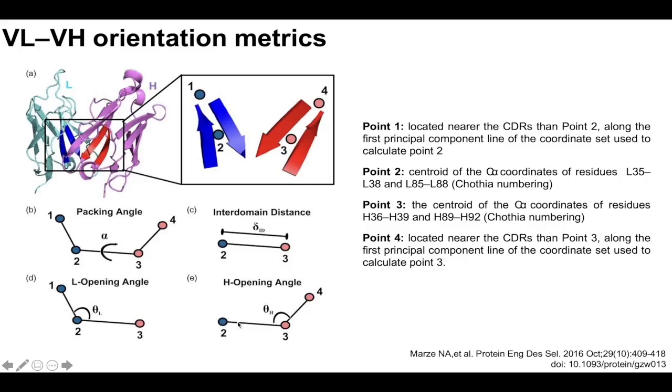And so the angle between that axis that your inner domain distance is measured along and the end point two makes up your opening angle for each of the chains. And then rotation around the axis defined for the inner domain distance is called the packing angle. And so each of these four values is sampled throughout a run in Rosetta antibody. And so the end result of this sampling is a model that has a VH and a VL that are docked as they would be in an experimentally derived structure.